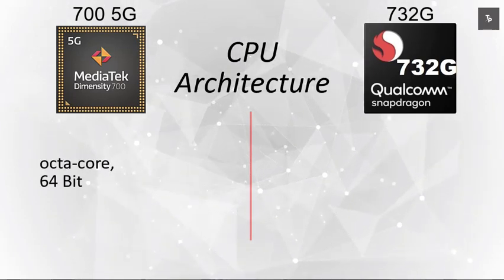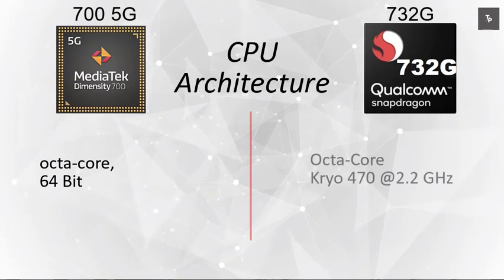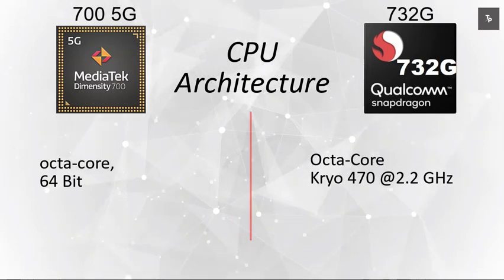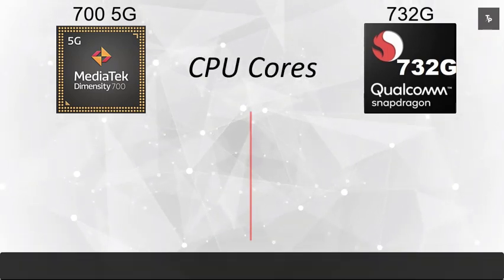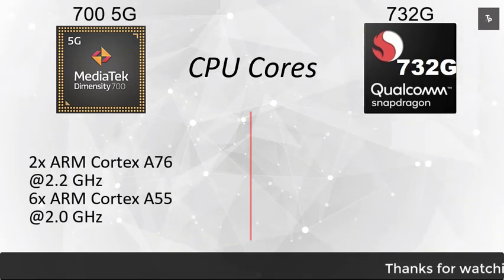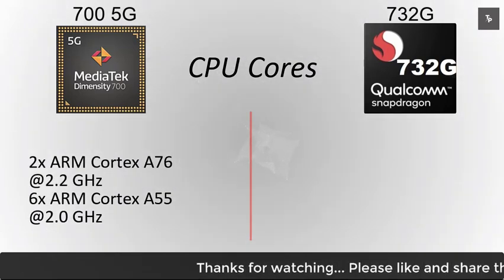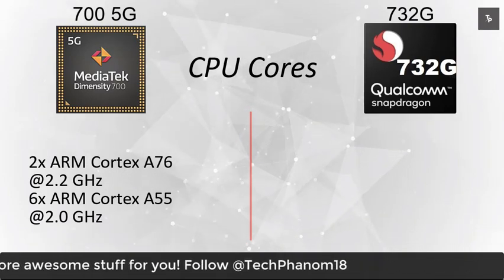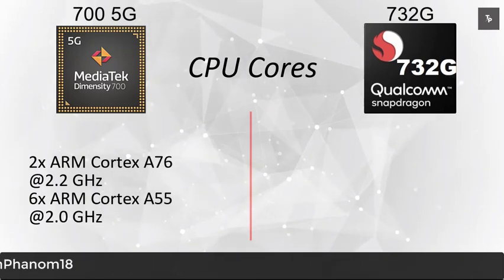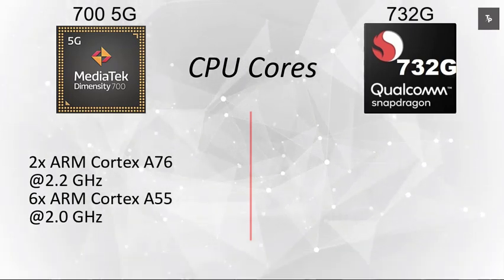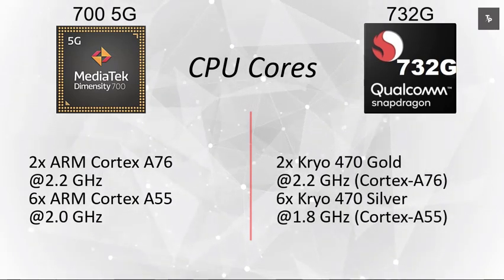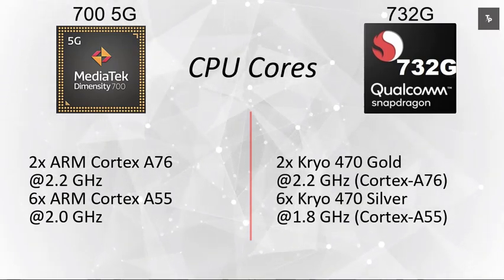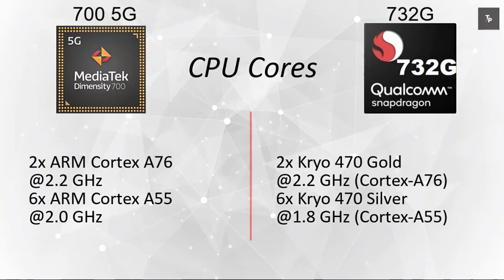About the CPU architecture: the Dimensity 700 is octa-core 64-bit, whereas the Snapdragon 732G is also octa-core with Kryo 472 at 2.2 GHz. On the CPU core side, the Dimensity 700 has 2 cores of ARM Cortex-A76 at 2.2 GHz and 6 cores of ARM Cortex-A55 at 2 GHz. For the Snapdragon 732G, we have 2 cores of Kryo 470 Gold at 2.2 GHz and 6 cores of Kryo 470 Silver at 1.8 GHz, based on Cortex-A76 and Cortex-A55.